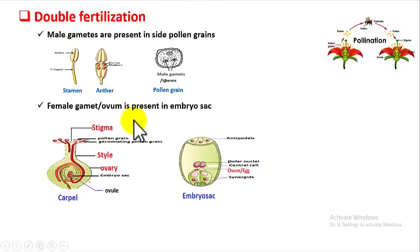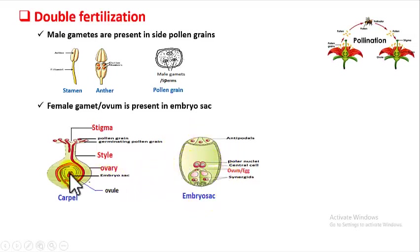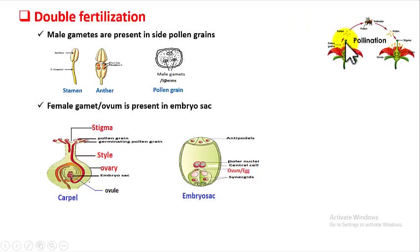The female gamete is also called ovum and is present inside the embryo sac. The embryo sac contains the female gamete called ovum. This embryo sac is present inside the ovule, and the ovule is inside the ovary. The ovary is the part of the female reproductive structure called carpel, which contains the female gamete inside the embryo sac.